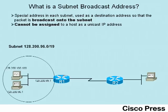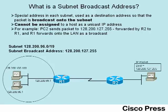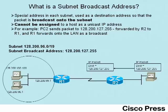Here's an example: PC2 is going to send an IP packet to address 128.200.127.255, which is the subnet broadcast address of the subnet on the left. PC2 sends its packet and recognizes this packet is destined to an address in a different subnet, so it sends the packet to its default gateway, in this case R2. R2 makes a simple routing decision and determines the subnet this address is in is on the left, so it forwards the packet to R1.